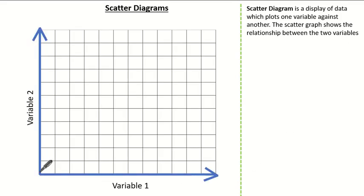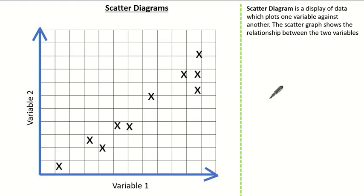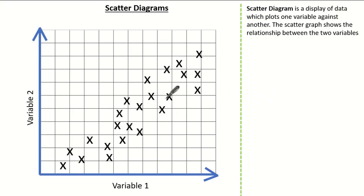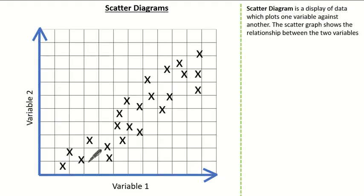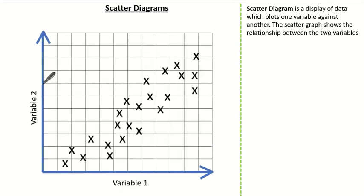Let's imagine we have two variables and we have some data to plot. The general independent variable — the variable that isn't influenced by anything — is on the x-axis, and the dependent variable — the one that is affected by the independent variable — is on the y-axis. If the data is scattered similar to this, we call this a positive correlation, which implies that variable 1 gets larger as does variable 2.